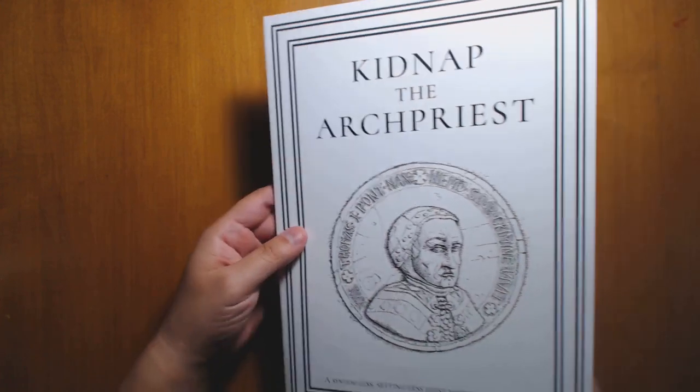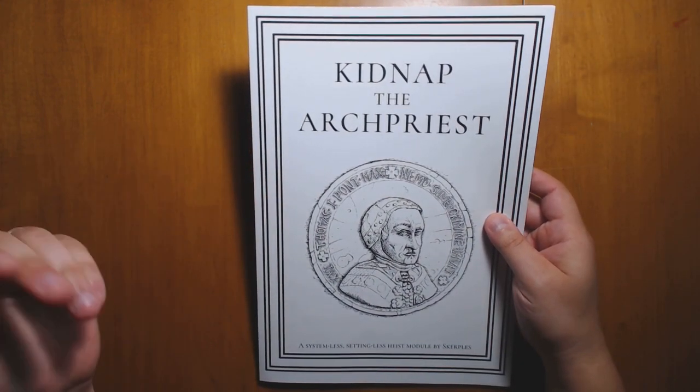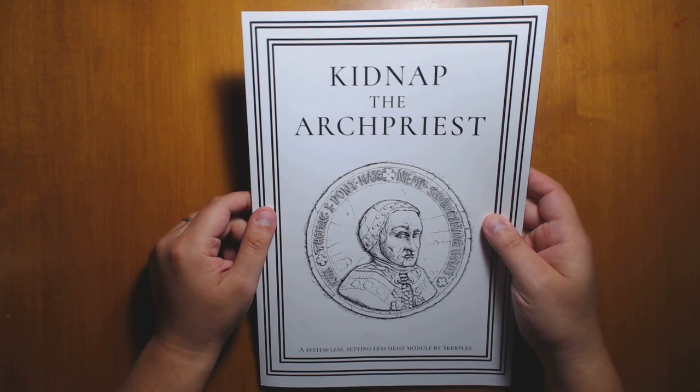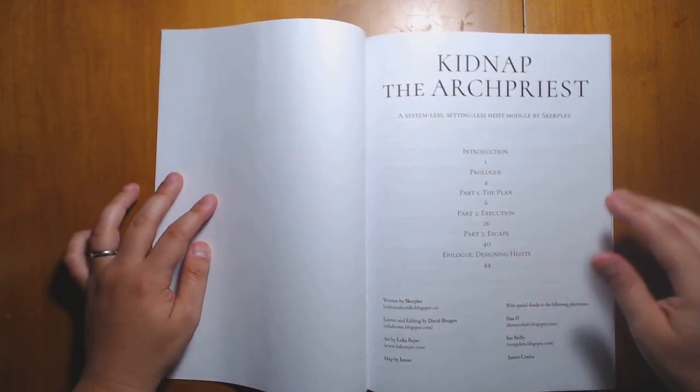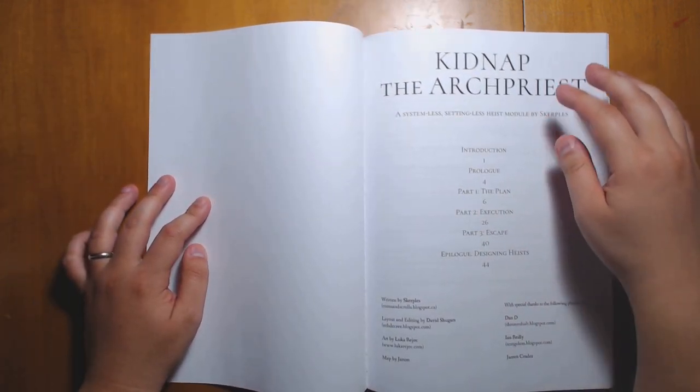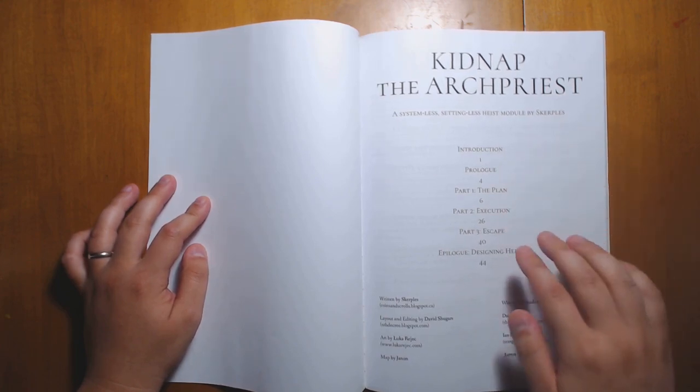So this looks at ways to solve that problem and gives a lot of really excellent tools to handle that. Here's our back cover. This is a print-on-demand version from DriveThruRPG. As usual, I will put a link down in the description below where you can check that out for yourself. So what we get here - it's broken down into a number of steps. We have the prologue, how to create the plan, the execution of the plan, and the escape with an epilogue.